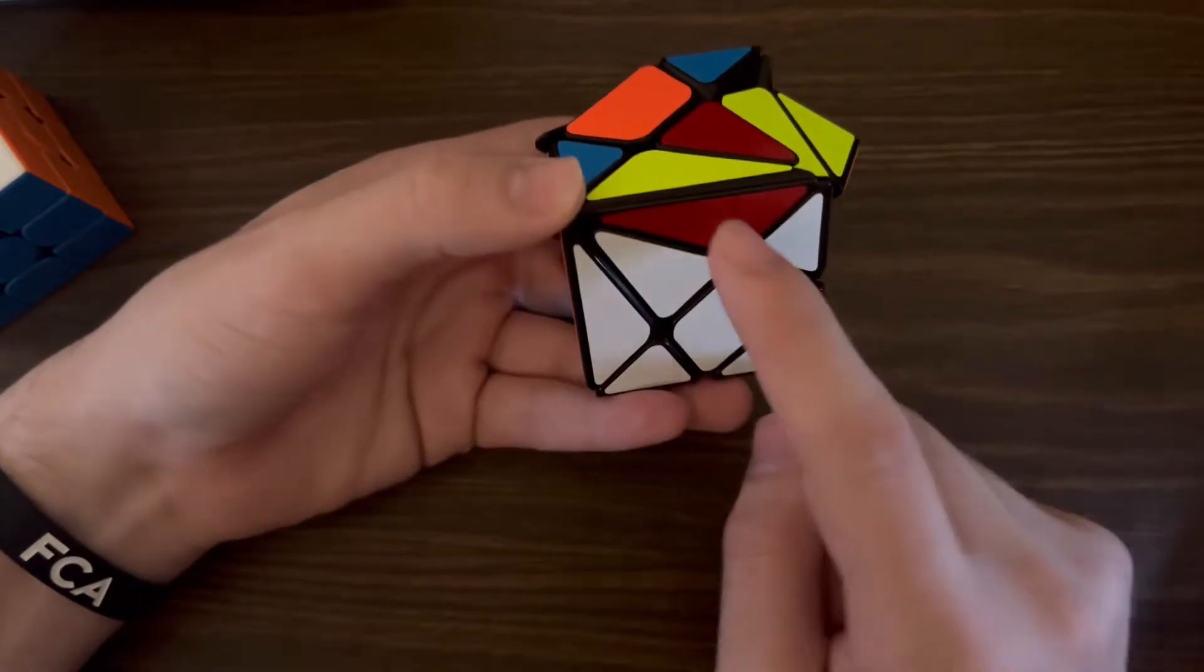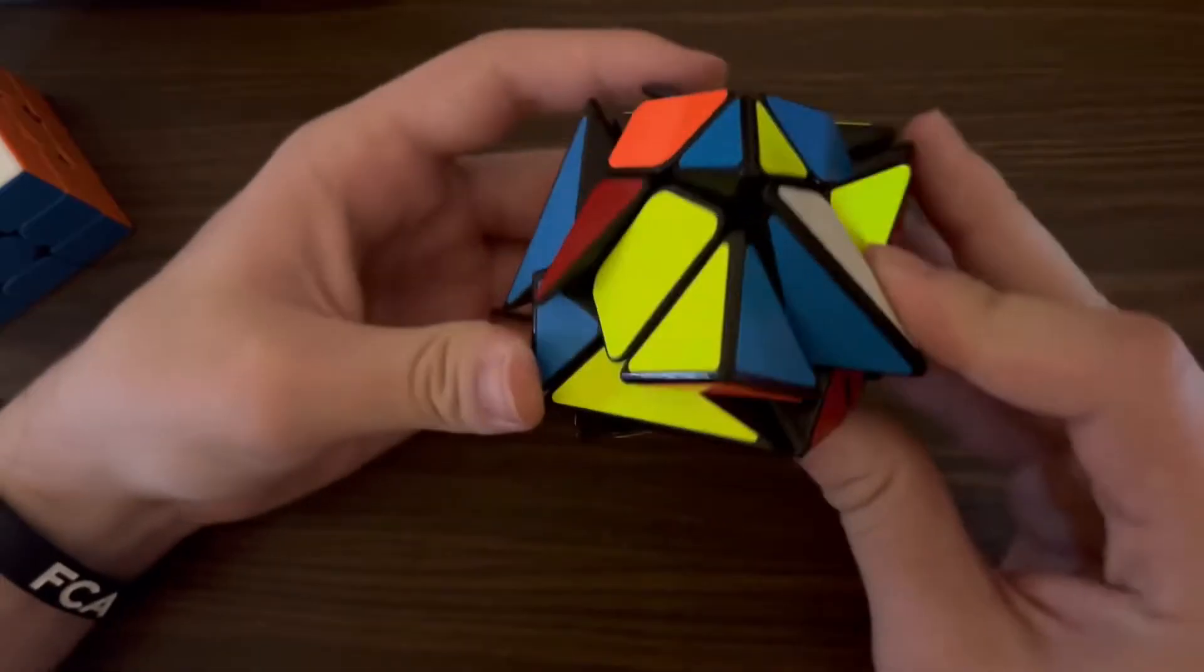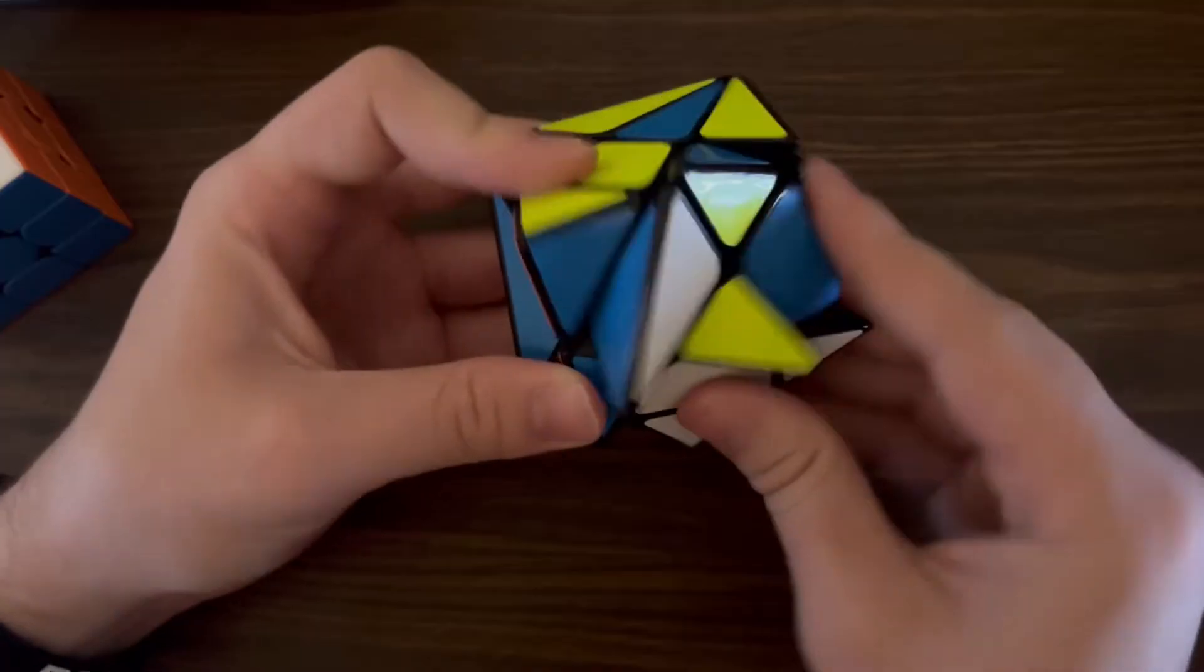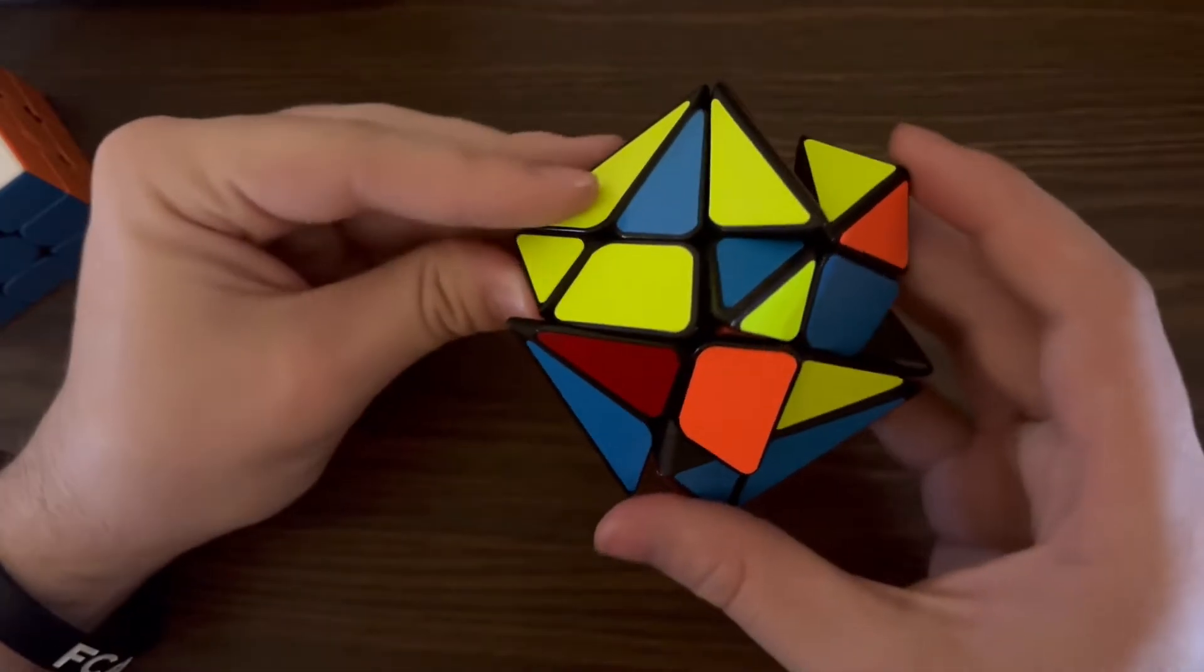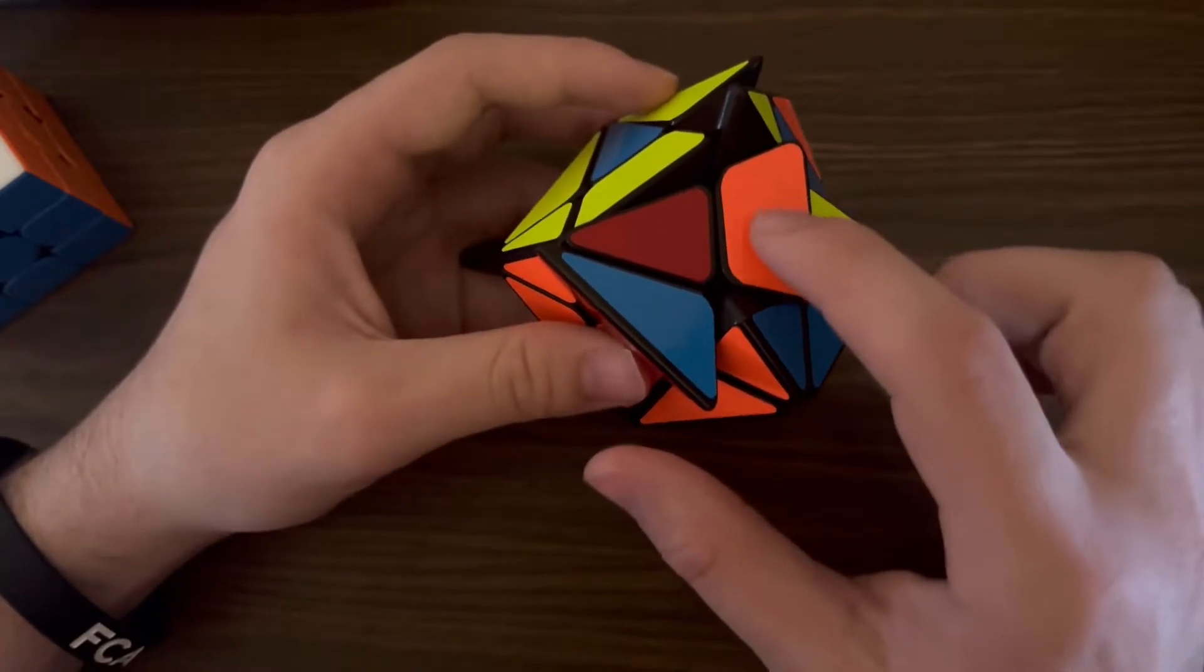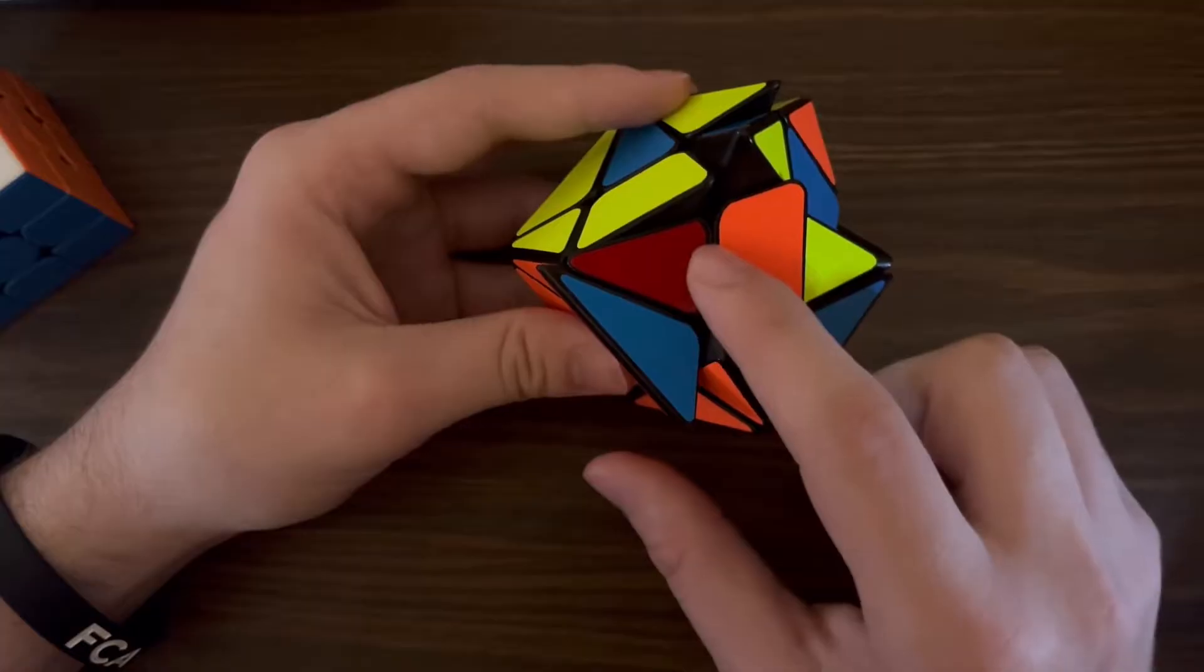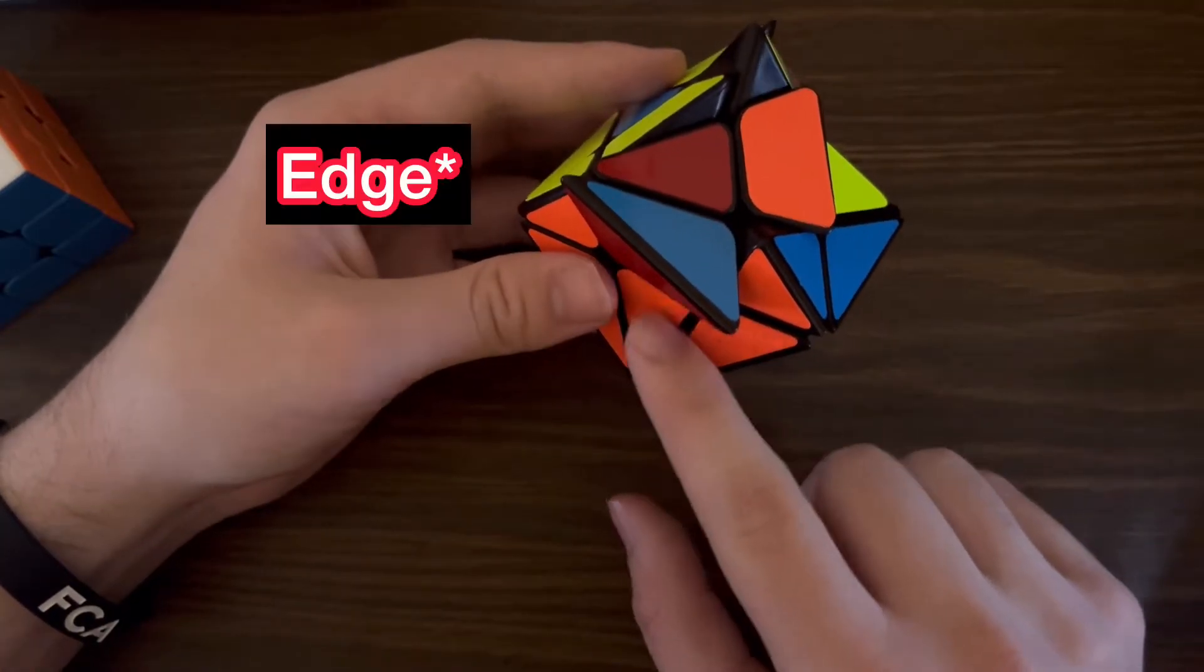Then we need to find a white and blue edge piece to go right here, which is right here. Remember this color must always match this color. Now one last edge piece to insert, we need to put this piece right here. Make sure that the smaller edge of the flat facing edge is pointed towards where we're going to put the corner in.